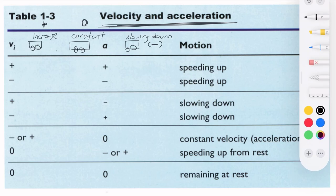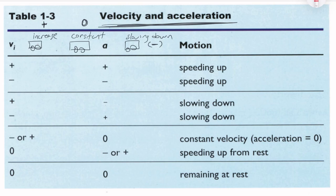Here are some key points. If the initial velocity is positive and the acceleration is positive, the object is speeding up. If the initial velocity is negative and the acceleration is also negative, the object is again speeding up.